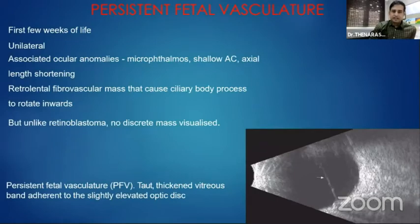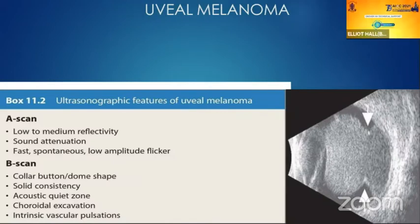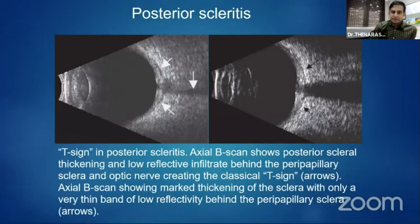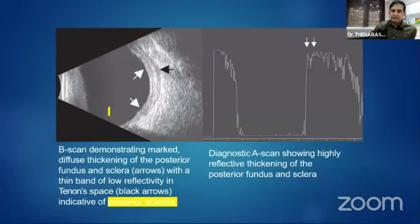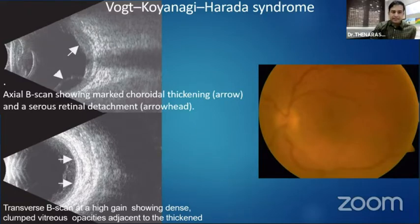Another cause of leukocoria in children is persistent hyperplastic primary vitreous (PHPV). To differentiate from retinoblastoma: there will be microphthalmos with a very short axial length, and a thickened stalk adherent to the optic disc. Uveal melanoma shows a classic collar-button or mushroom-shaped appearance with choroidal excavation. In posterior scleritis, the classic T-sign is seen — a low-reflective infiltrate behind the peripapillary sclera — along with increased choroidal thickness. In VKH syndrome, multiple serous detachments are seen with increased choroidal thickness and mild vitreous dot echoes suggesting inflammation.